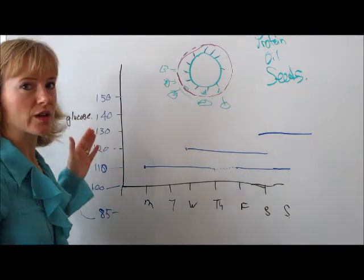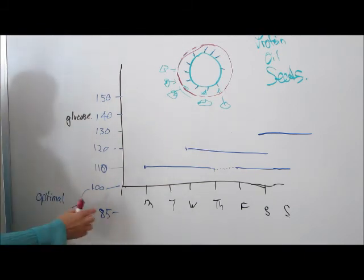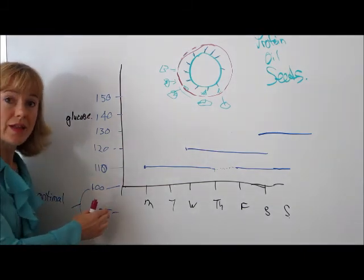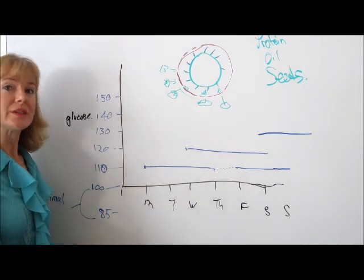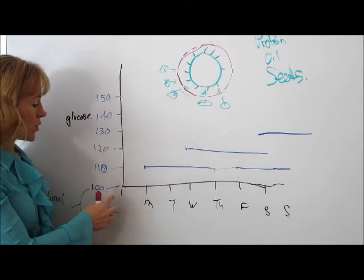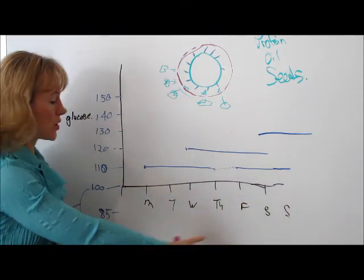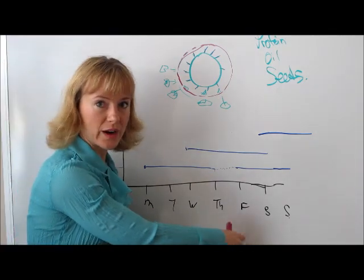So if you look at this chart here, what you'll see is that this is glucose, and your morning normal glucose, the optimal needs to be between 85 and 100. This is the days of the week: Monday, Tuesday, Wednesday, Thursday, Friday, Saturday, Sunday.